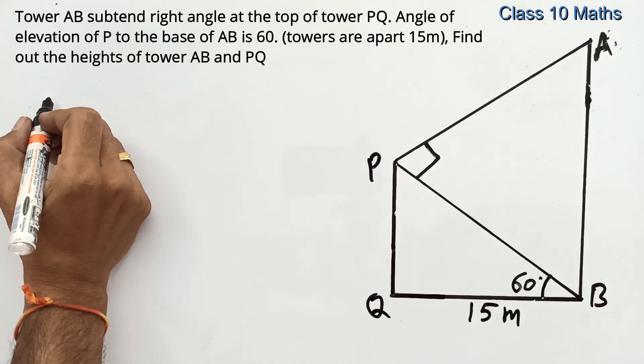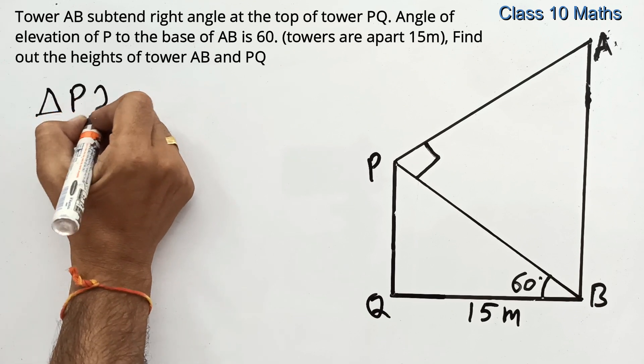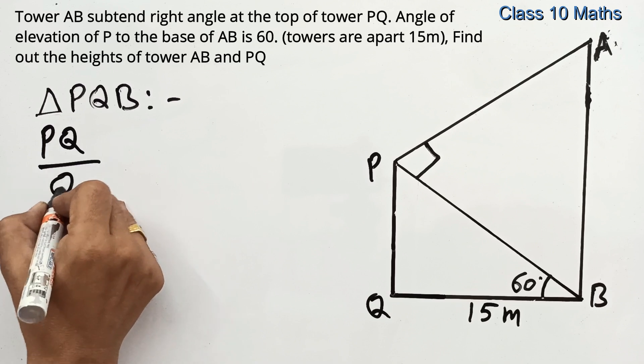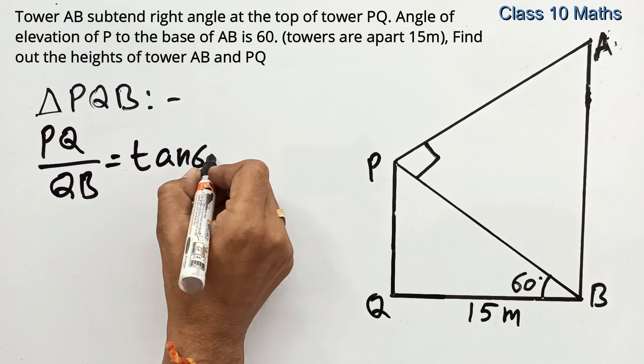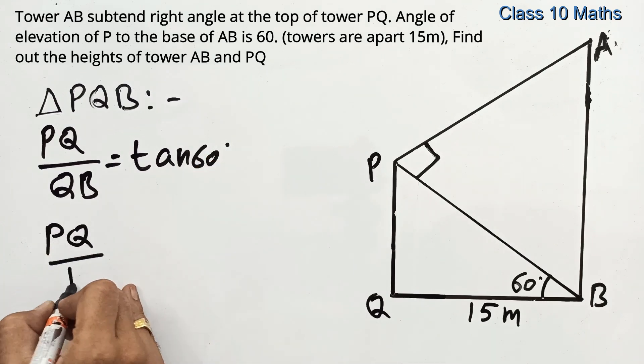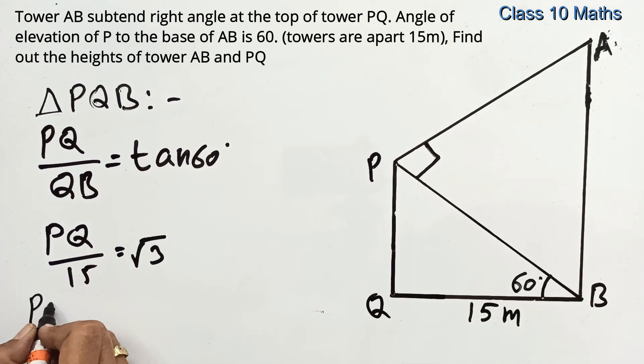So let us find out the height of PQ first. In triangle PQB, PQ upon QB is tan 60. So height of the tower PQ is 15 root 3 meters.